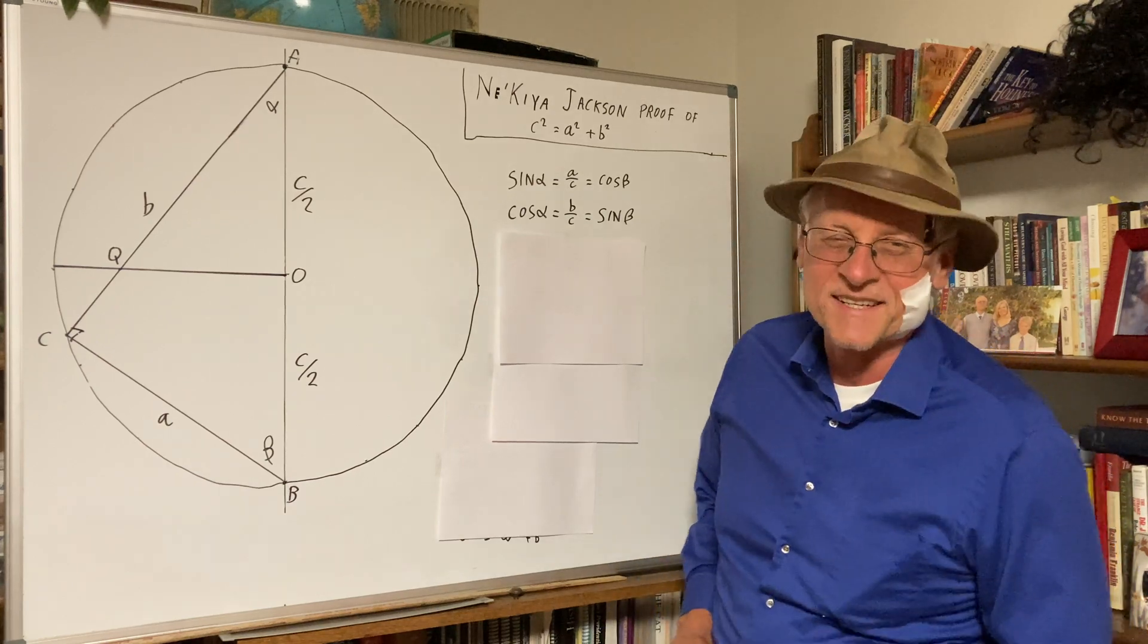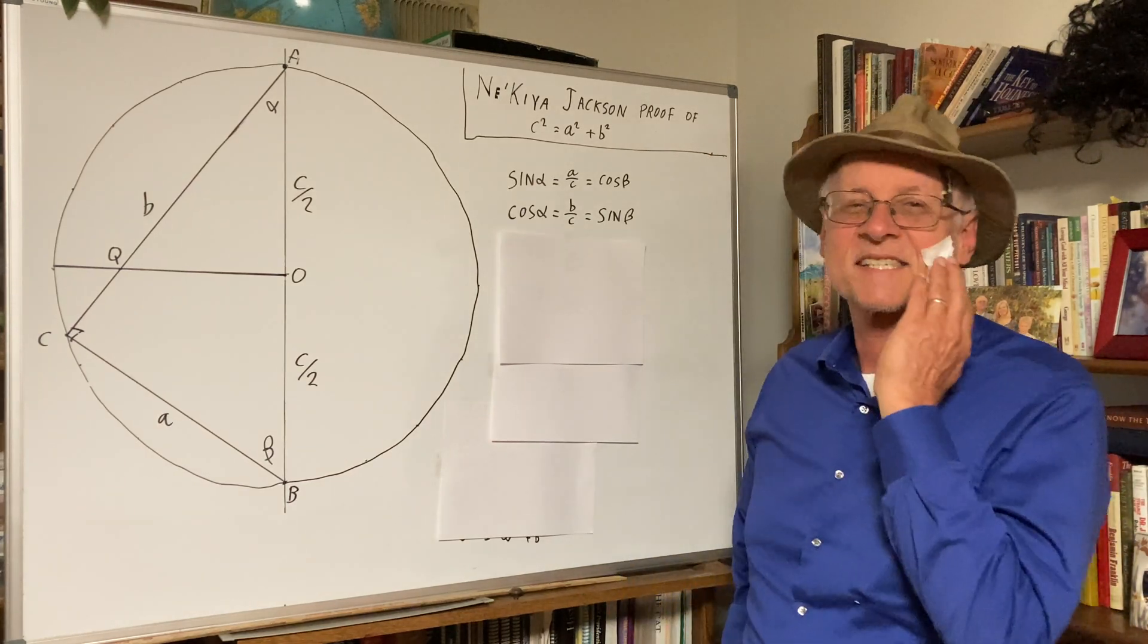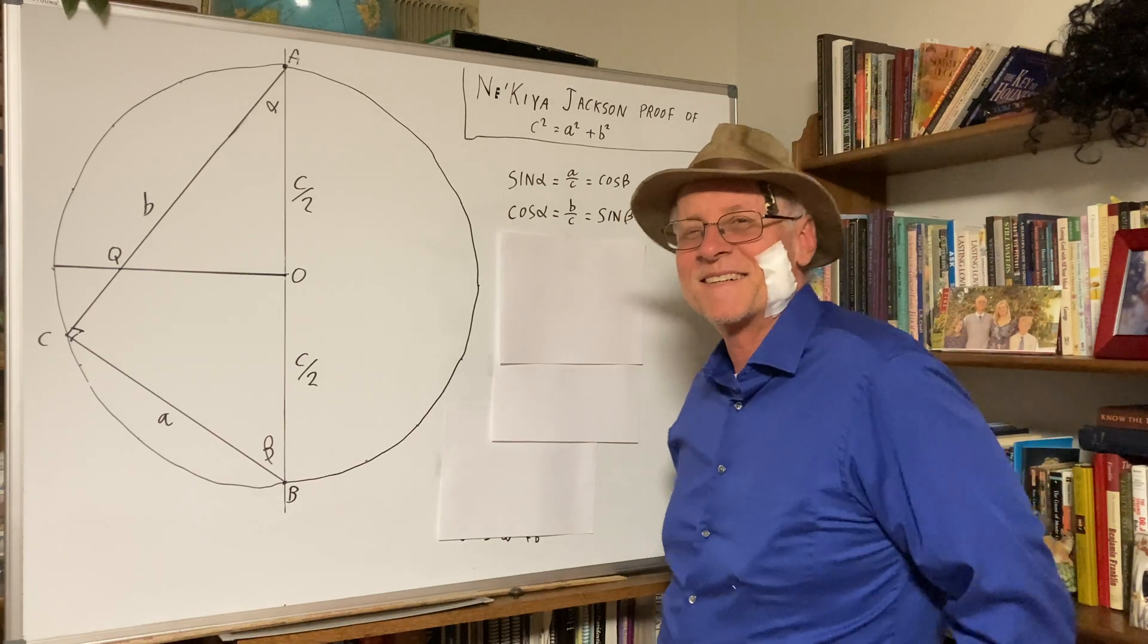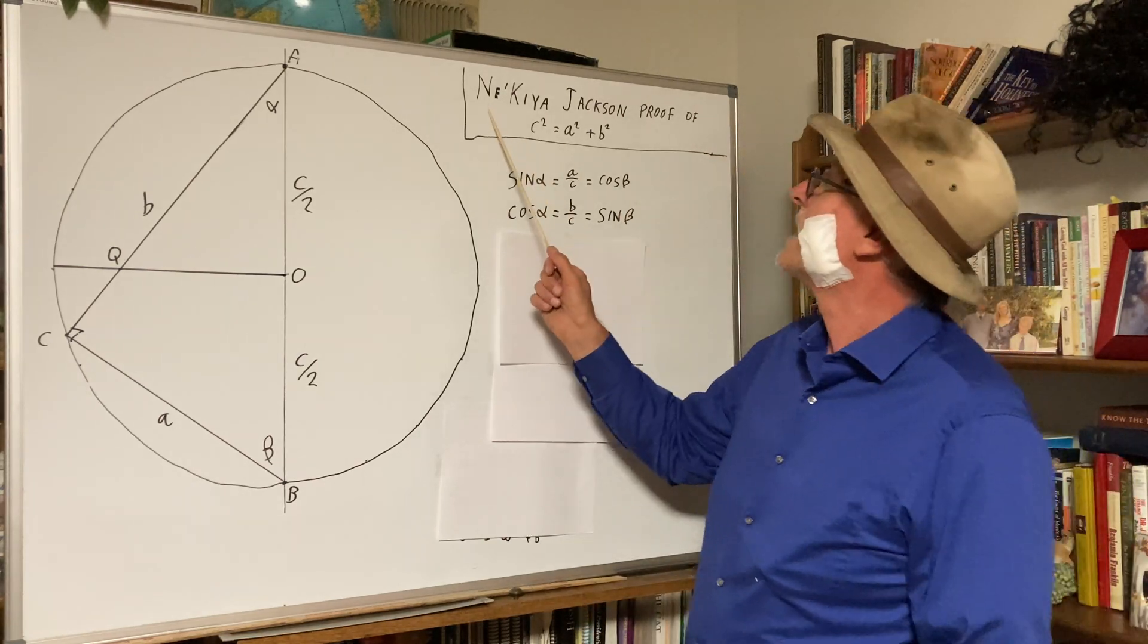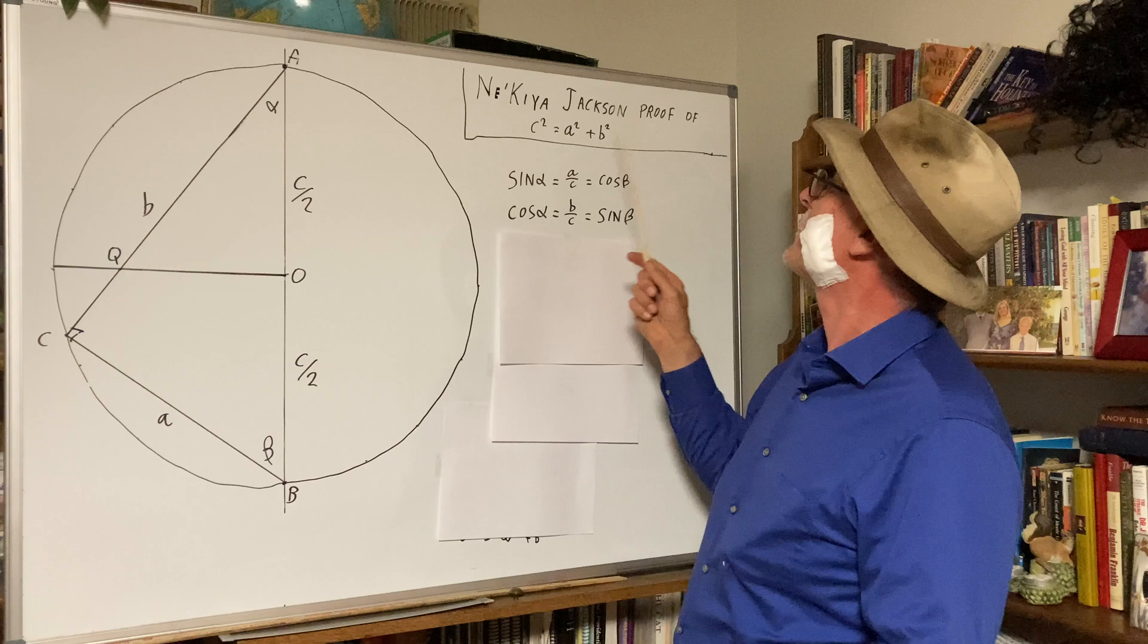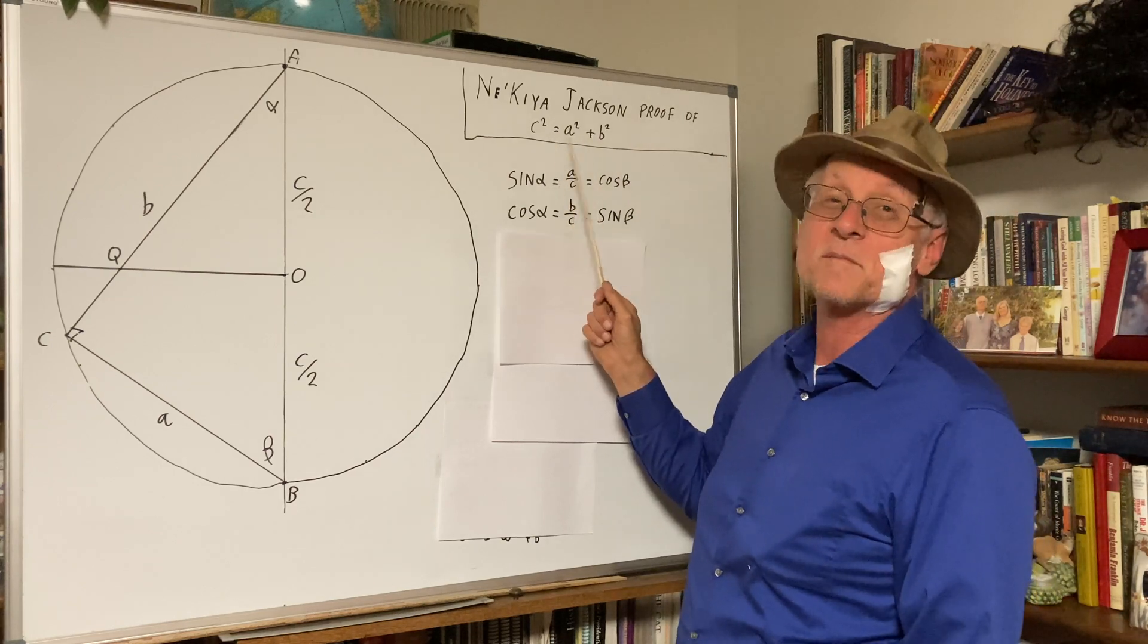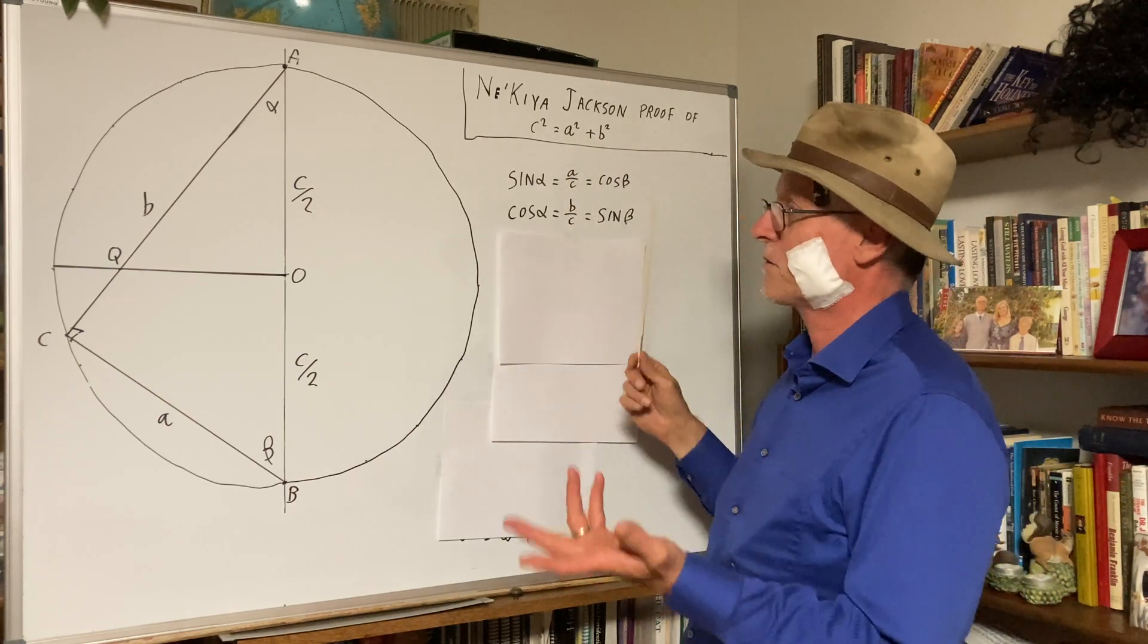All right, welcome back quadrature fans. It's been a while. I had some surgery. All right. Today we'll do the Nakia Jackson proof of Pythagorean theorem. C squared equals A squared plus B squared.